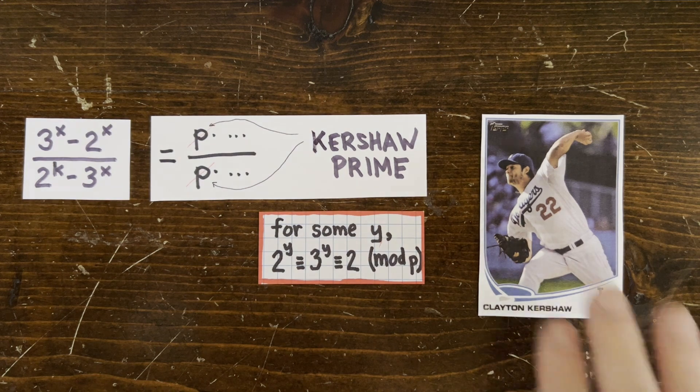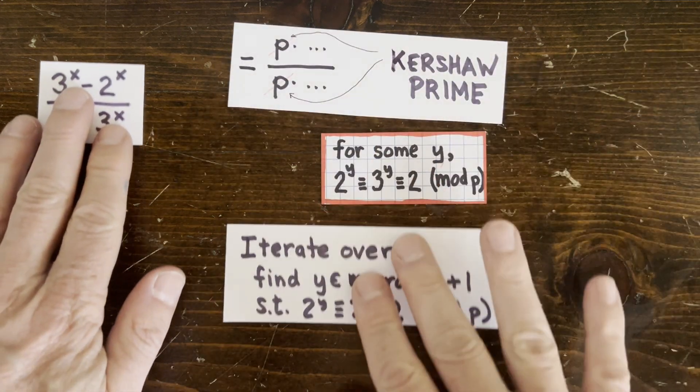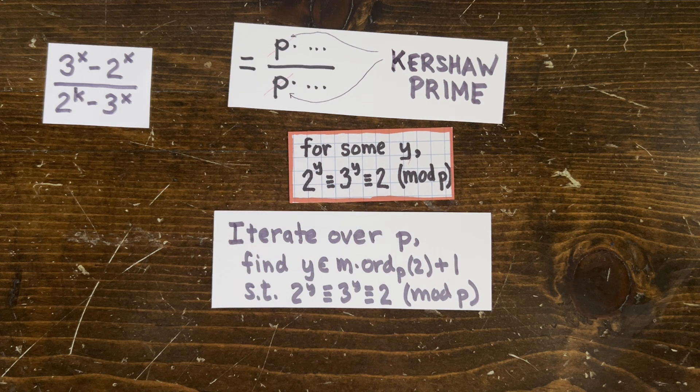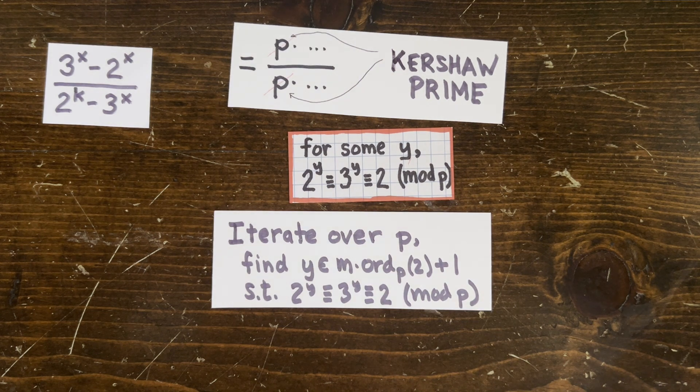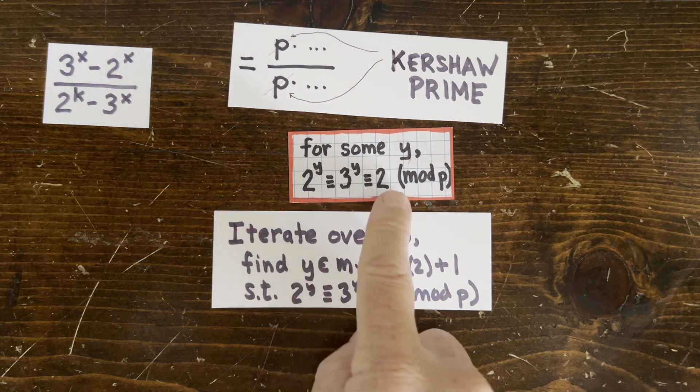So that gives us two ways to go look for more Kershaw primes. First we can iterate through all the primes and for each one try to find a y like this. Unfortunately we only need to look at a few y's.